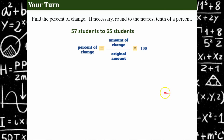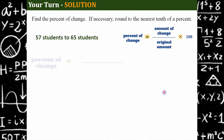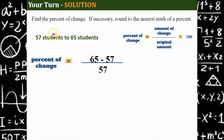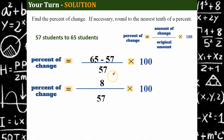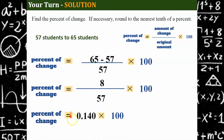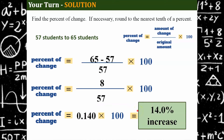Welcome back. Let's see how you did. The first thing we want to do is identify our difference, which is 65 subtract 57, all over our original amount, multiplied by 100 to write as a percent. 65 subtract 57 is 8, divided by the original amount of 57 is 0.140, multiplied by 100 gives us 14 percent increase. It went from 57 to 65 — so the class increased by 14 percent.